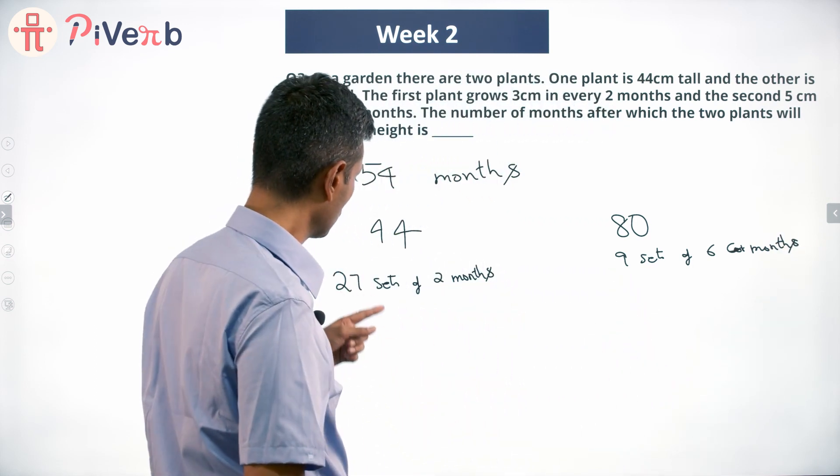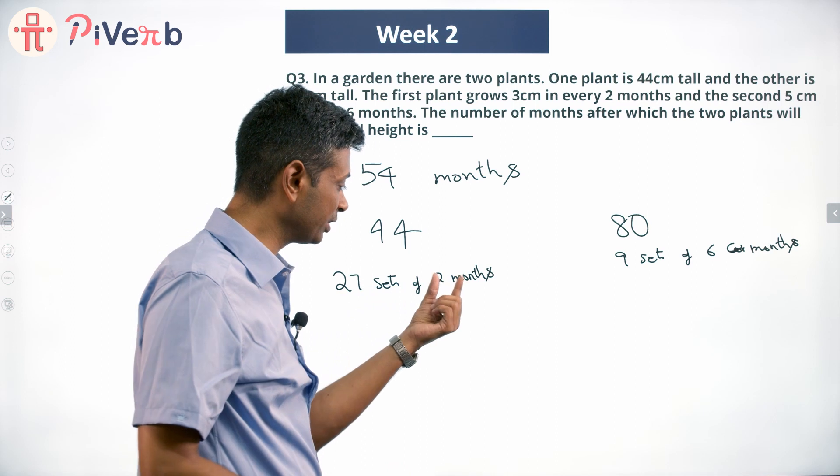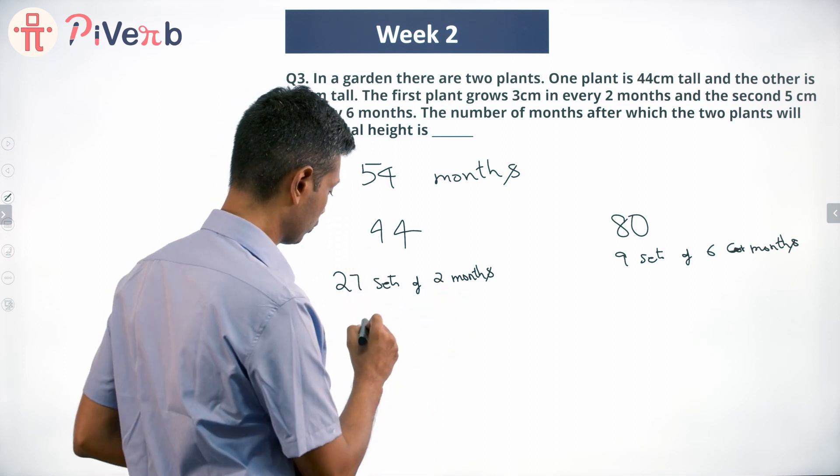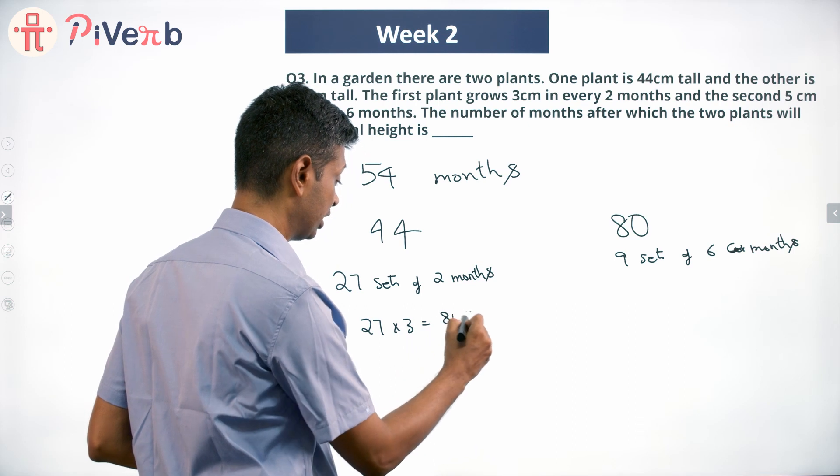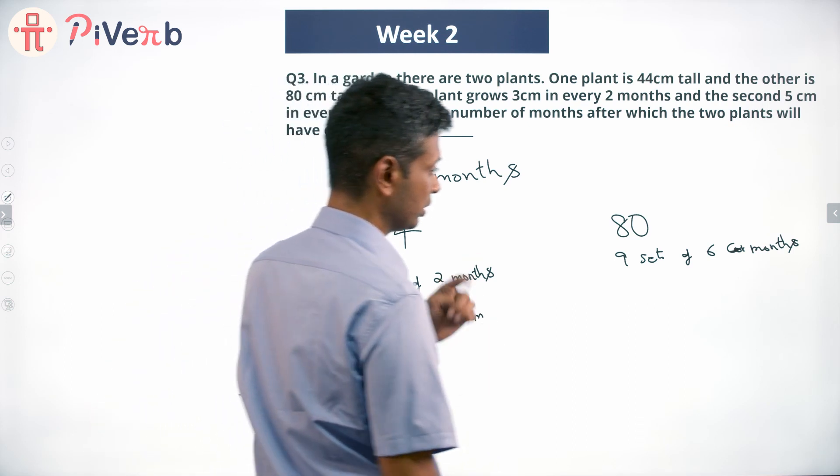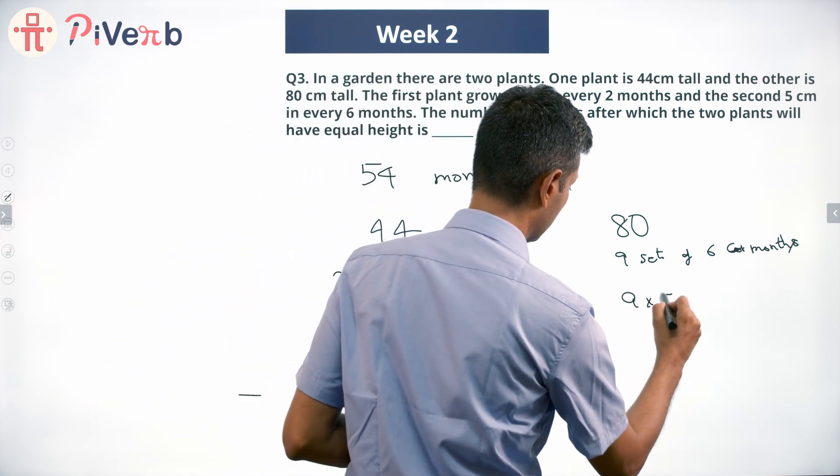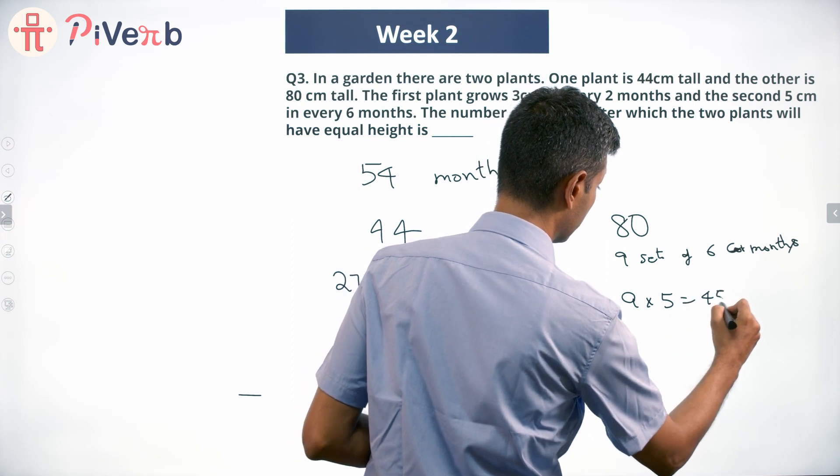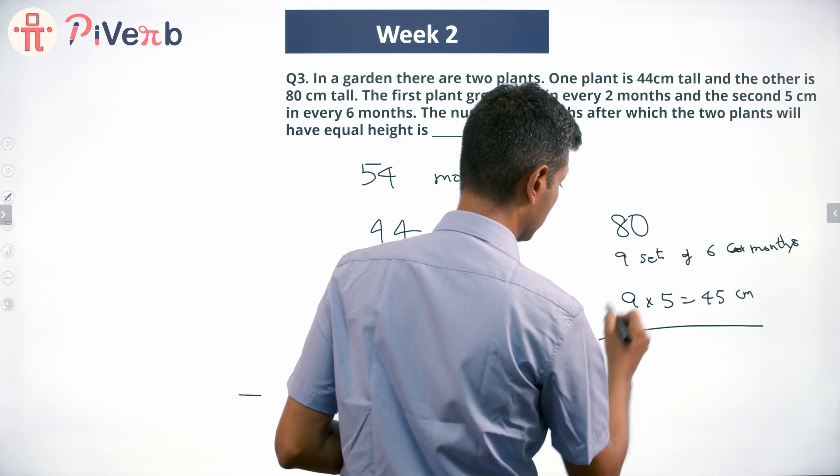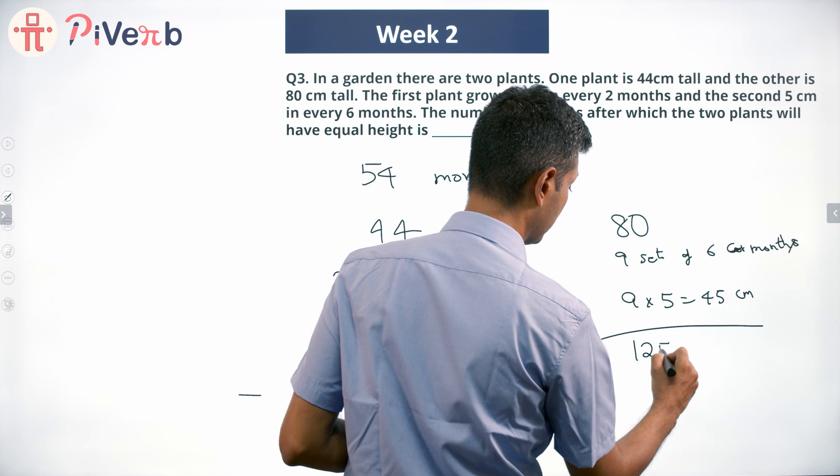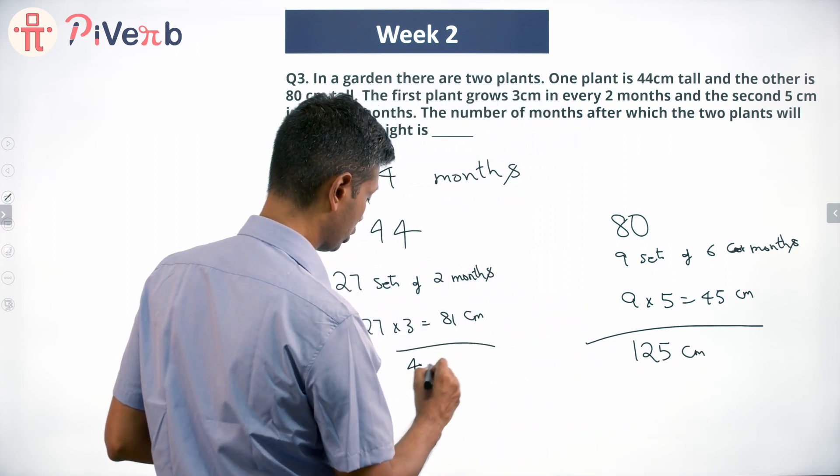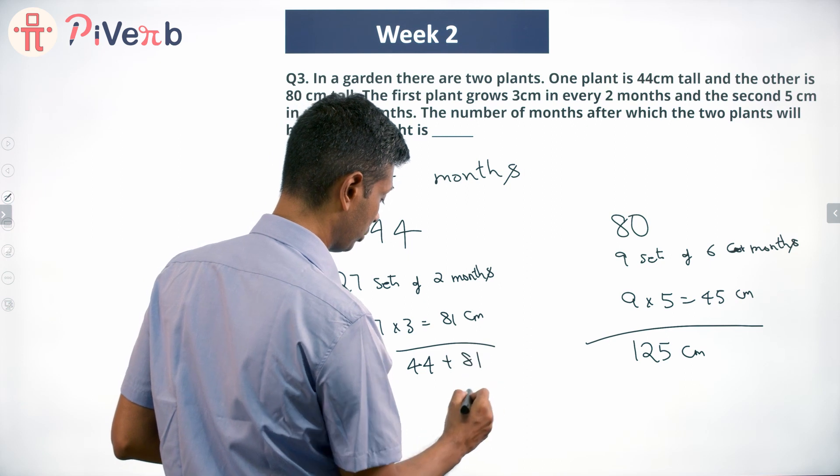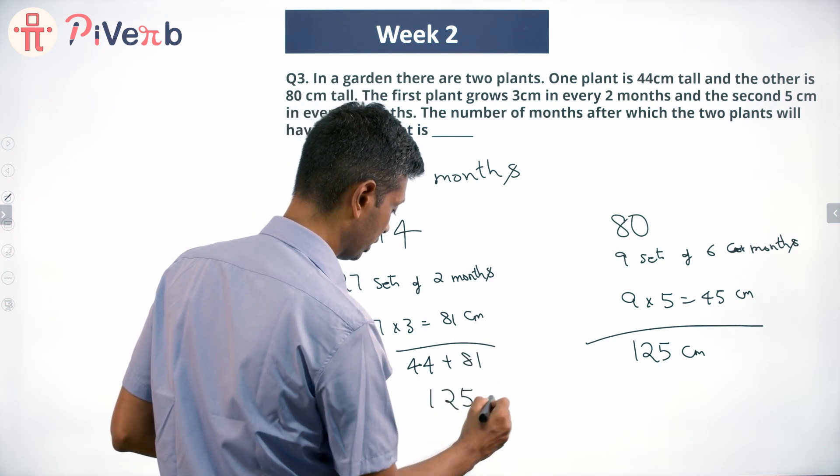In this case, 27 sets of 2 months each - each 2 months will be a 3 centimeter growth. 27 times 3 is 81 centimeters this grows. This is 9 times 5 equals 45 centimeters this grows. This will have a height of 125 centimeters. This will have a height of 44 plus 81, which again is 125 centimeters.